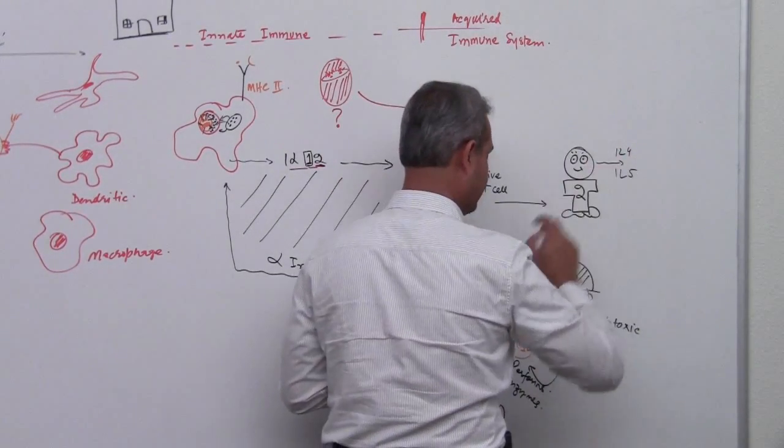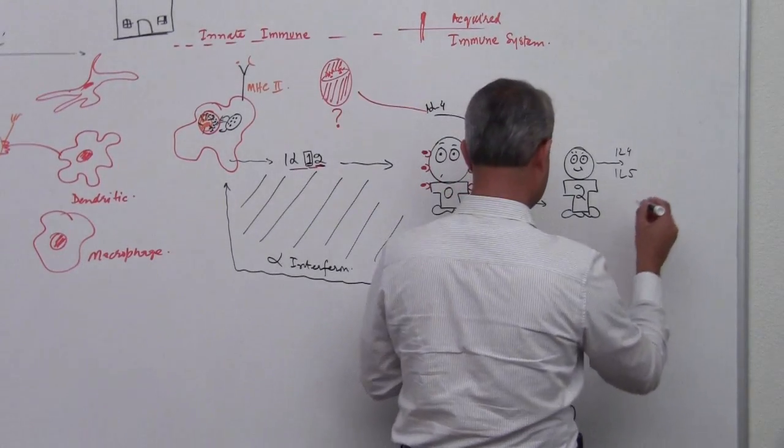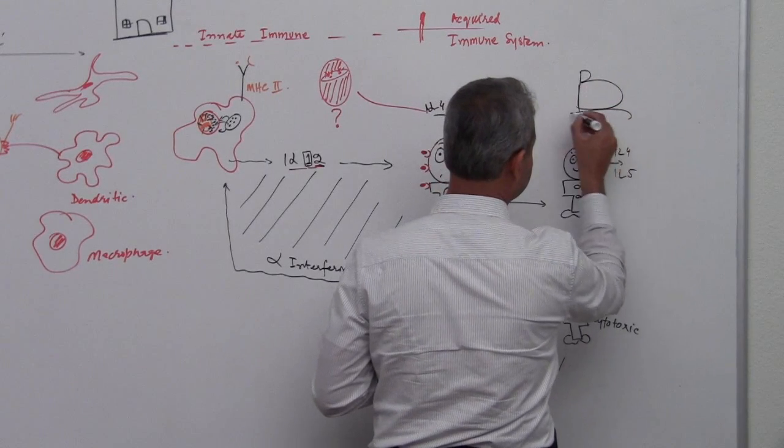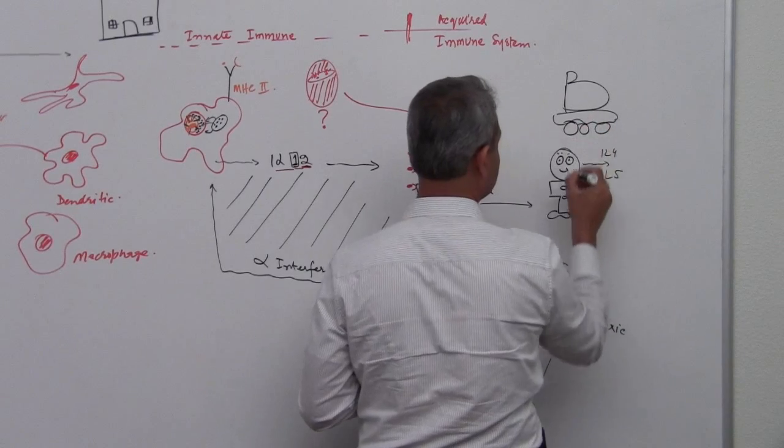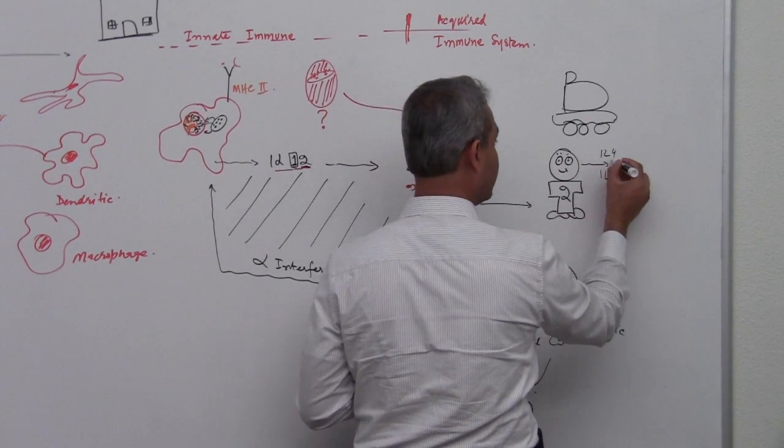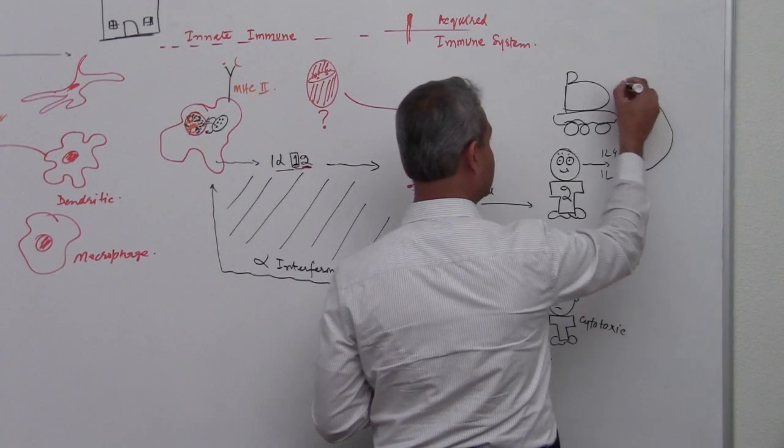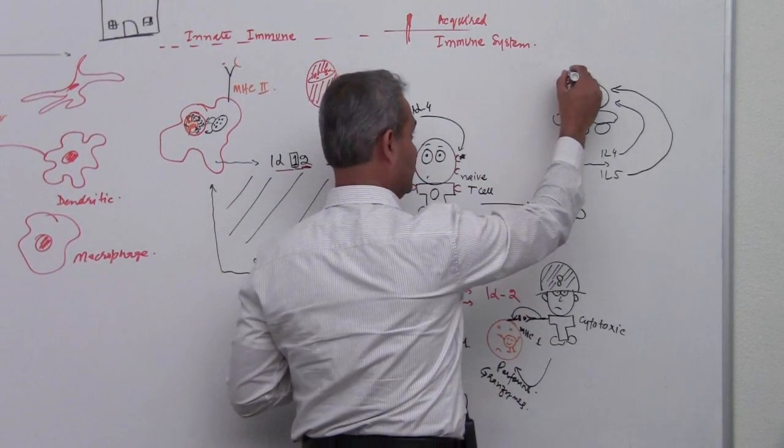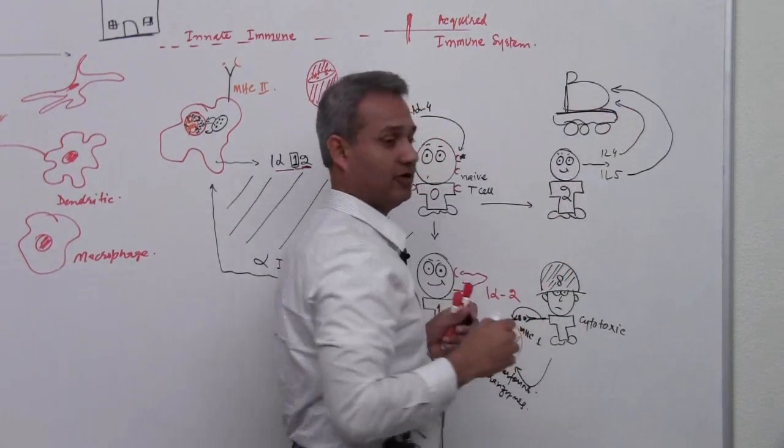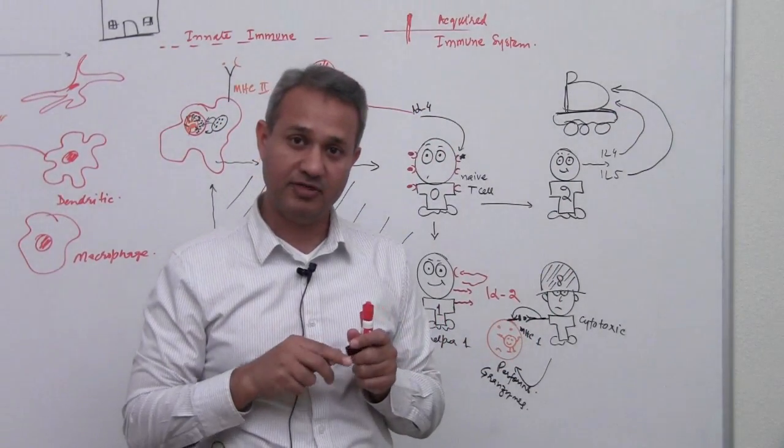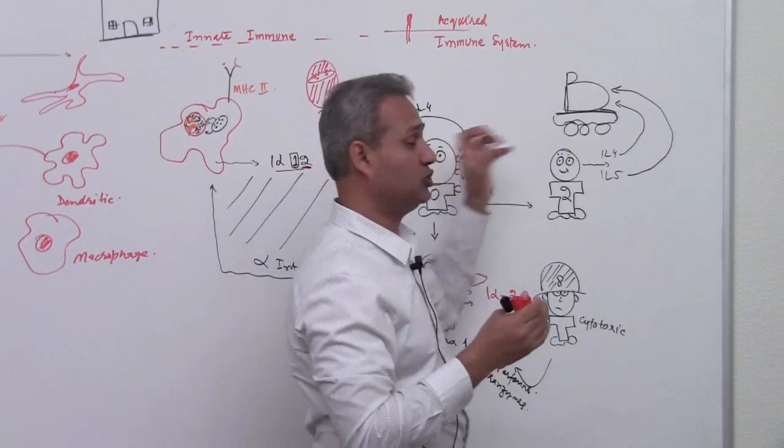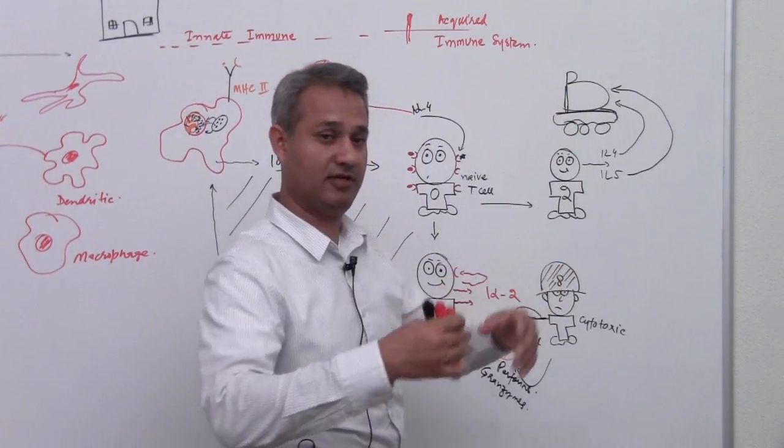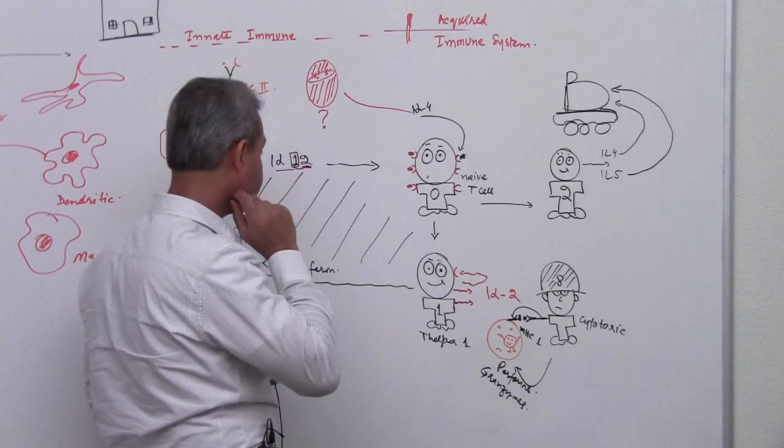These guys in the T helper 2 would then be working with B cells. So I am just going to make a B cell here. This guy is going to be secreting IL-4 and 5 which are going to act on the B cell and this guy is going to be working with the B cell. This is just a big B here. But this is a weapon factory of our body which forms the weapons, which makes the weapons and then shoots them. So this is like a mobile weapon factory sitting on this little carrier.